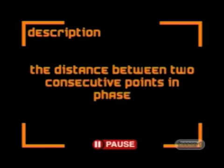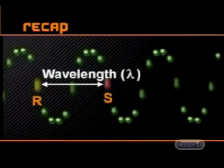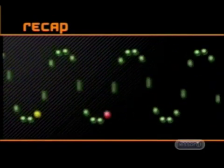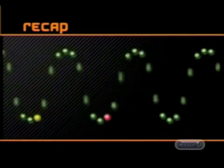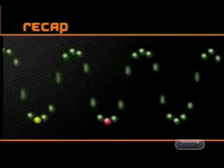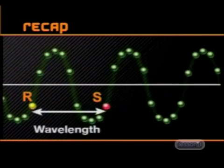The distance between two consecutive points in phase is the wavelength lambda of a wave. Here you can see points R and S moving in phase with each other, and so they are one wavelength apart.